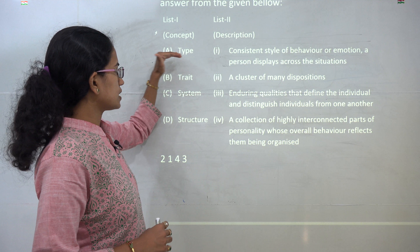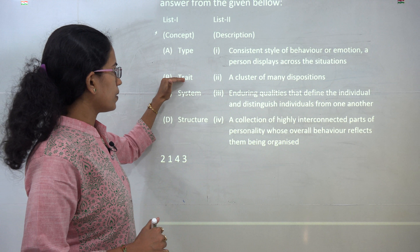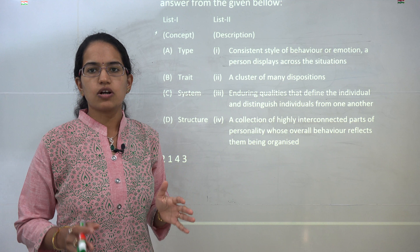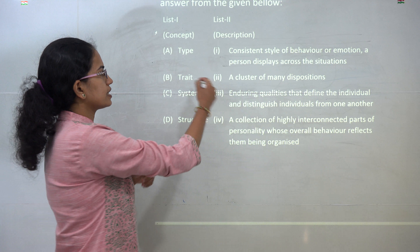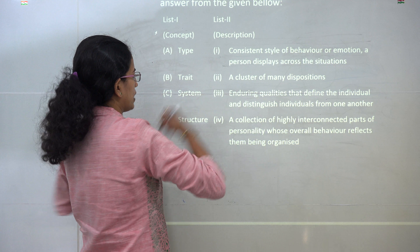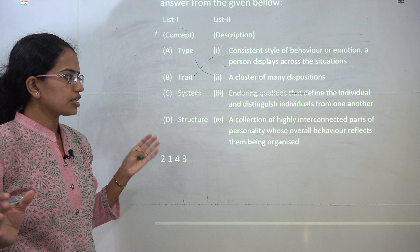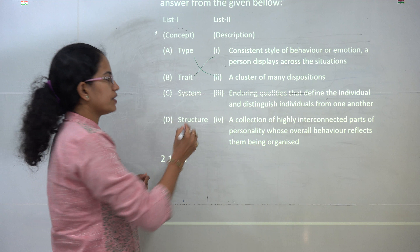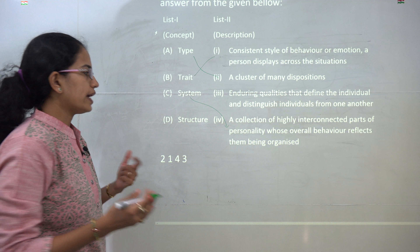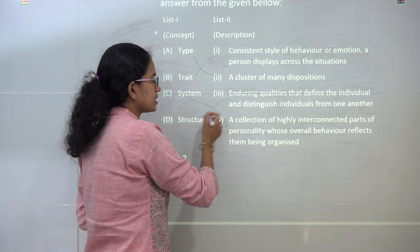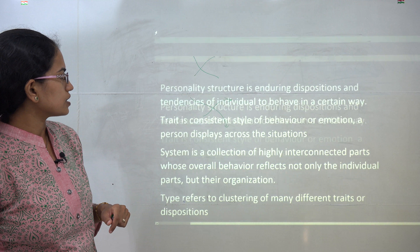The first question type involves a cluster of many dispositions or traits. A trait is a unique or consistent style of behavior that a person follows. Trait matches with the first option. Then you have 'system,' which is a collection of personality reflecting the overall behavior of an individual, while 'structure' refers to the qualities that define an individual. These are the correct matches for this question.